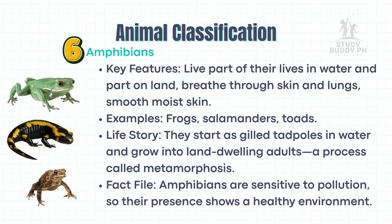Amphibians: Key features — live part of their lives in water and part on land; breathe through skin and lungs; smooth, moist skin. Examples: frogs, salamanders, toads. Life story: they start as tadpoles in water and grow into land-dwelling adults — a process called metamorphosis. Fact: amphibians are sensitive to pollution, so their presence shows a healthy environment.